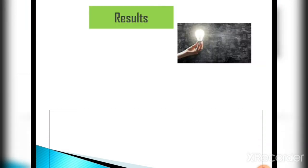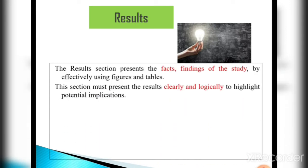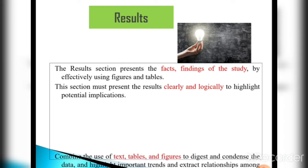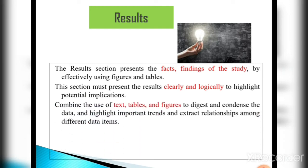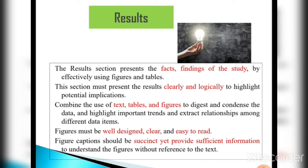Next is the results section. The results section presents the factual findings of the study by effectively using figures and tables. This section must present the results clearly and logically to highlight potential applications. Combine the use of text, tables, and figures to organize and convey the data, highlight important trends, and extract relationships among different data items. Figures must be well designed, clear, and easy to read. Figure captions should be detailed enough to provide sufficient information to understand the figures without reference to the text.